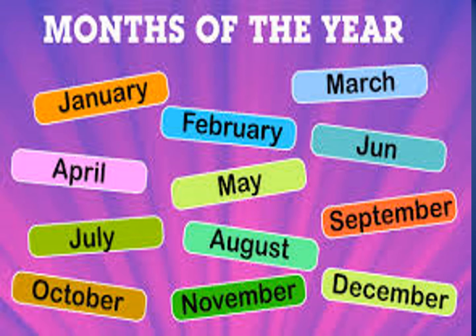You have to learn these spellings and remember the numbers of the months. January is the first month, February is the second month, March is the third month, April is the fourth month, May is the fifth month, June is the sixth month, July is the 7th month, August is the 8th month, September is the 9th month, October — sorry — is the 10th month, November is the 11th month, December is the 12th month.